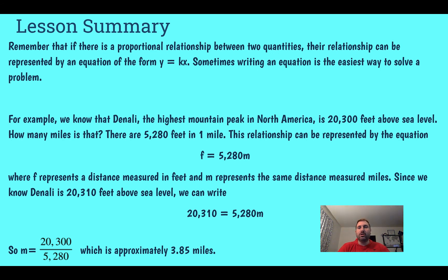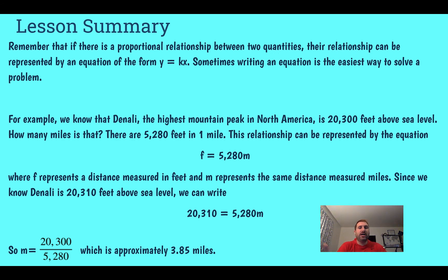Another example could be figuring out the height of a mountain given in feet. If we know there are 5,280 feet in one mile, that would be our constant of proportionality — so feet would equal 5,280 times M, the number of miles.